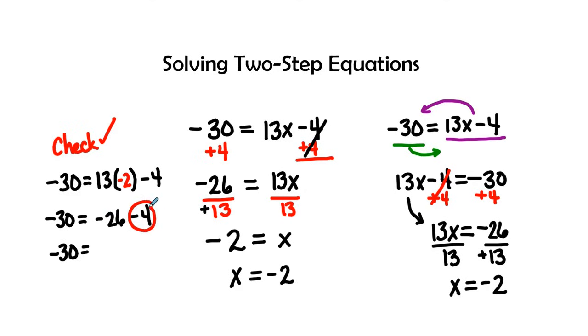And so this is really a negative 4, and this is really a negative 26. And then I'm just going to add those two together. So negative 26 and negative 4 gives me that negative 30. So therefore, the answer checks out, and I know that I have the correct answer.